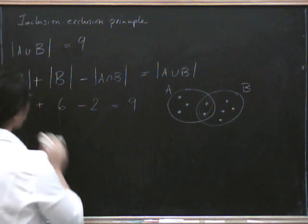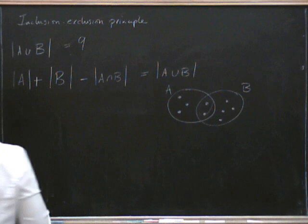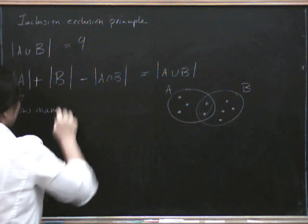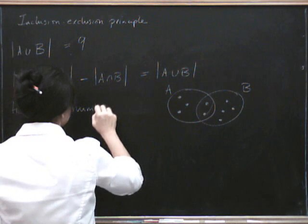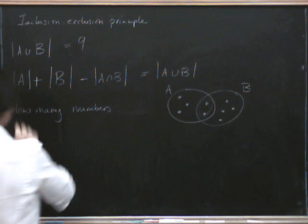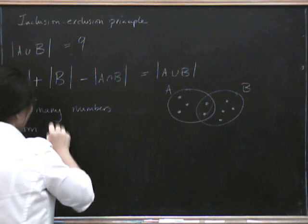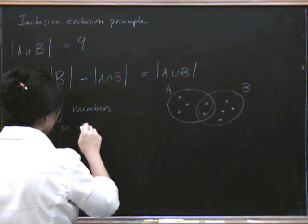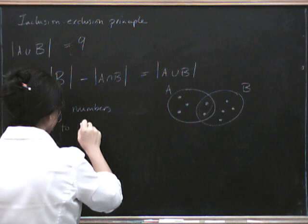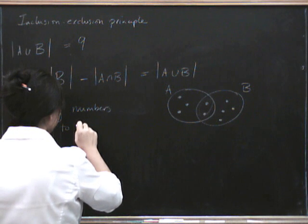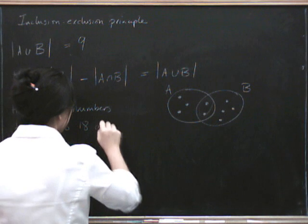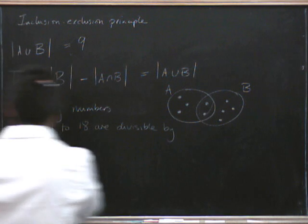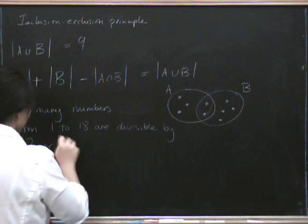So let's have another example of how this works. How many numbers from 1 to 18 are divisible by 2 or 3?